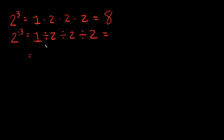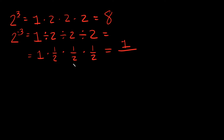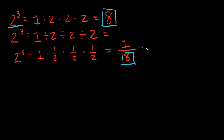There's an easier way of writing this, because dividing by 2 is the same thing as multiplying by 1/2. So 1 times 1/2 times 1/2 times 1/2 — you just multiply the tops together and the bottoms together. The top gives 1, and the bottom gives 2 times 2 times 2, which is 8. So the result is 1/8. And notice this 8 is the exact same number as 2 cubed, so we can rewrite this as 1 over 2 cubed.